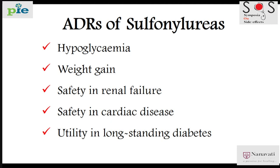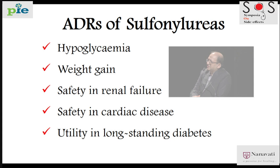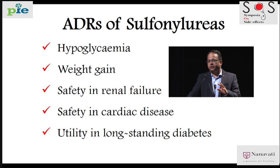Now we talk about sulfonylureas — a group of drugs going out of fashion due to many other groups that have come. But for us Indians, they are still very important. Sulfonylureas are a fantastic drug in the sense that they are a poor man's good anti-diabetic drug. Glibenclamide was sold at 5 paisa and even 10 years back at 50 paisa — the cheapest drug you can get. Sulfonylurea gives an immediate fall in blood glucose level. However, hypoglycemia is very common with sulfonylureas.